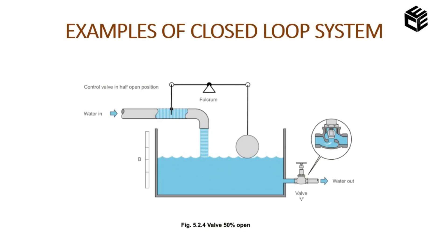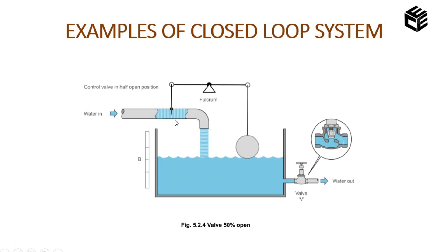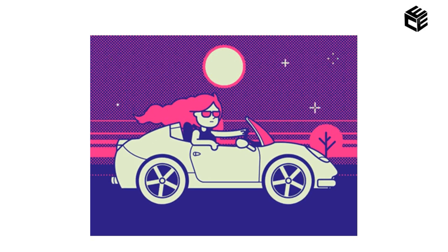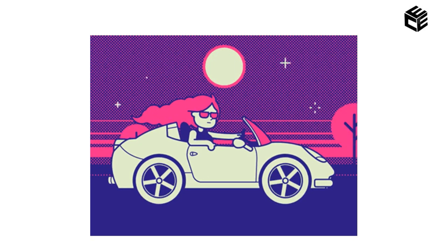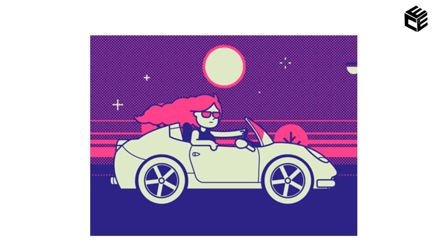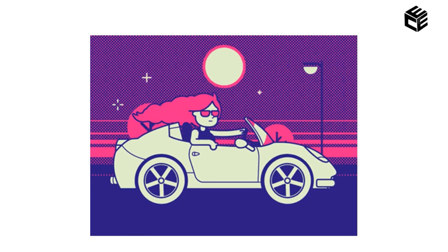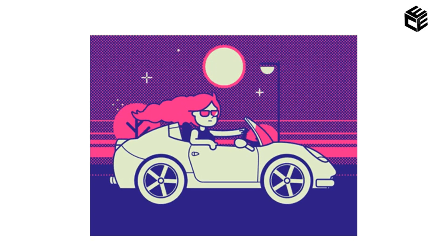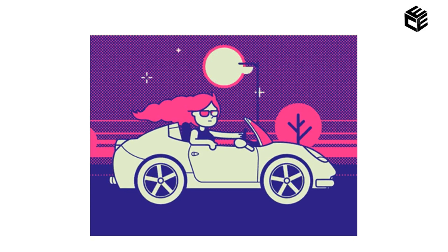Some examples for closed loop system: when the water in the tank reaches a particular level, the valve gets blocked. The output reaches a particular level and the part of the output is given back to the input side — this comprises a closed loop system. Another example is driving a car: you give many inputs using the accelerator, brake, and steering, and apply the clutch to control the speed. The output is completely depending upon the input, so the output has an effect on input, which is called a closed loop system.